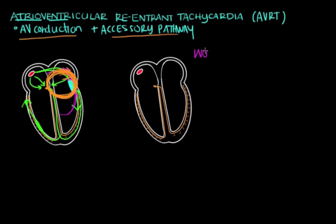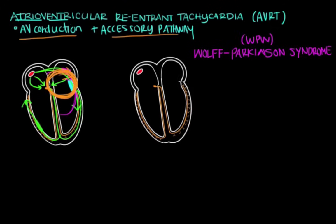One of the best ways to conceptualize AVRT is through its most classic example: Wolff-Parkinson-White syndrome, or WPW. In WPW, you have an accessory pathway between the atrium and the ventricle. Signal goes from the SA node to the AV node and then to the ventricles, but it can also go from the SA node through this accessory pathway and stimulate the ventricles that way. So you're getting ventricular stimulation through both the AV node and the accessory pathway.